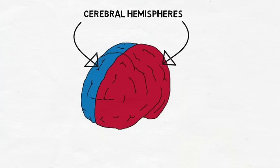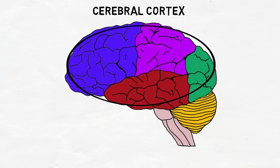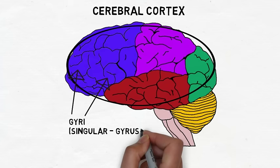The surface of the cerebral hemispheres is covered with a thick layer of brain tissue known as the cerebral cortex. The cerebral cortex is folded to create more surface area, forming these ridges, known as gyri, and grooves, known as sulci.